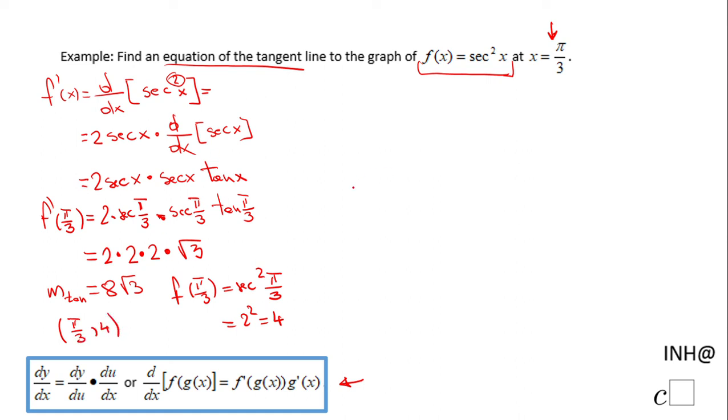So for that reason we're going to have this equation: y minus y1, that will be this 4, equals the slope of the tangent line, 8 square root of 3, times x minus x1, which is pi over 3 right here.